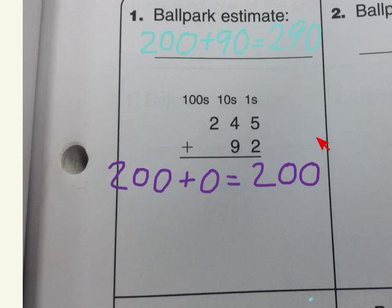Next up is the tens place. Here we have 40 and 90, so I need to add 40 to 90. I know that 4 plus 9 is 13, so 40 plus 90 is going to be 130.